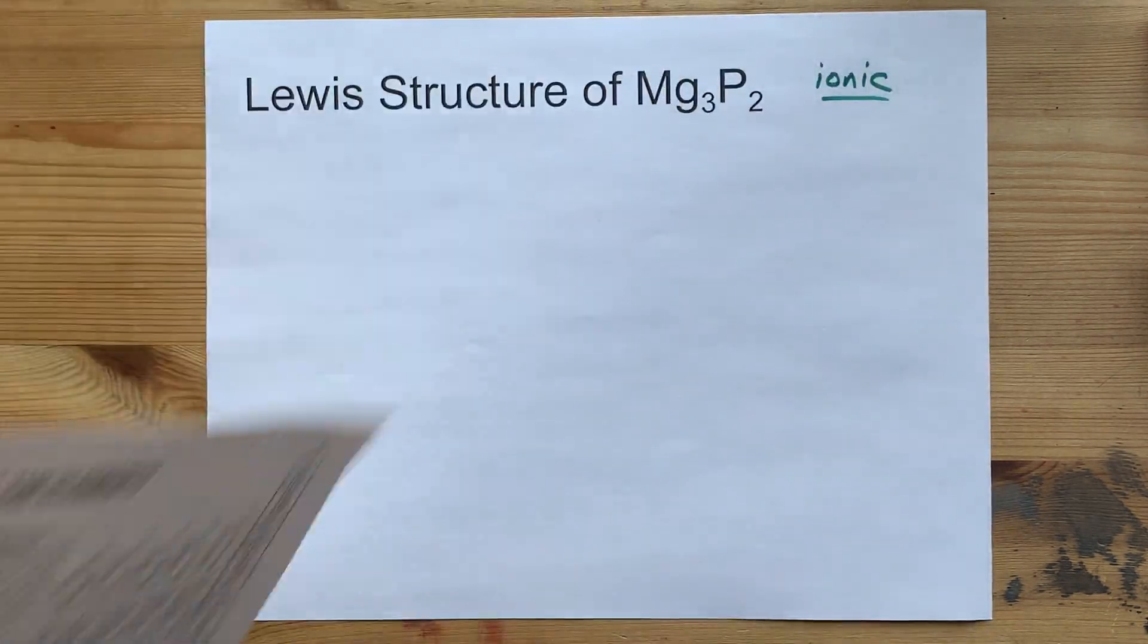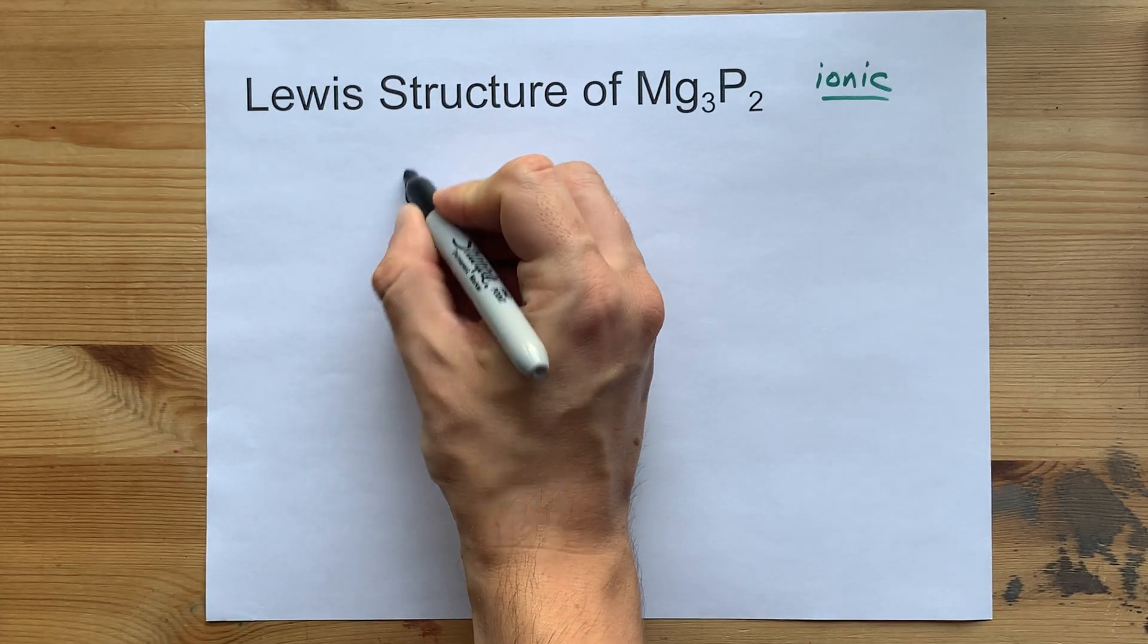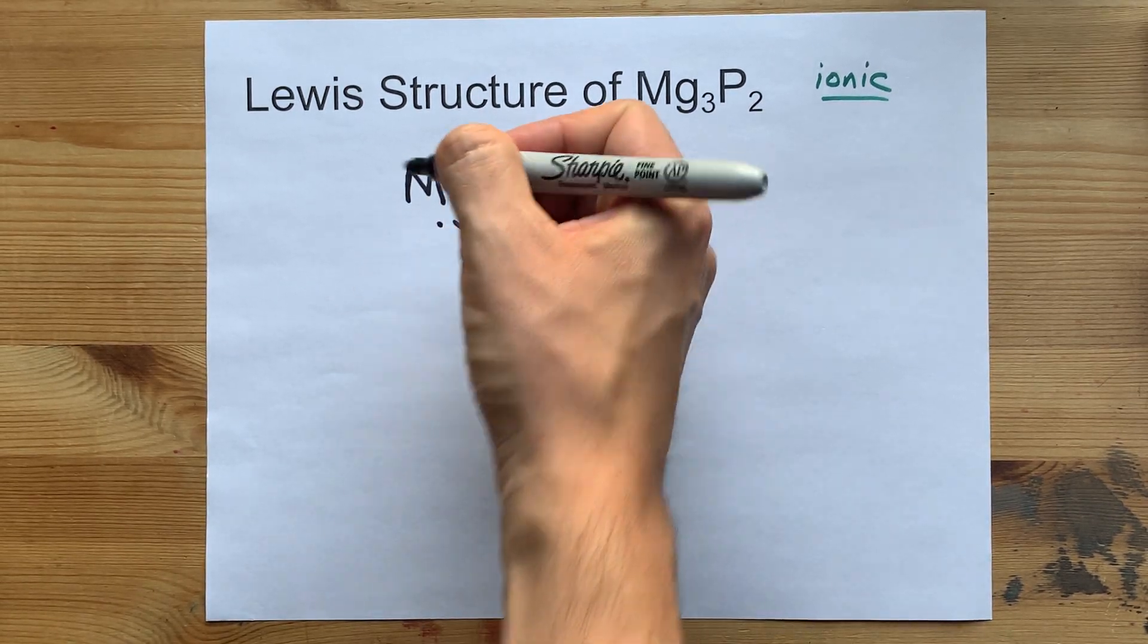Magnesium is in group 2, so it brings 2 valence electrons. Draw yourself Mg with 2 dots.